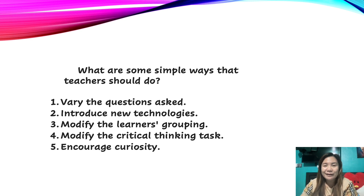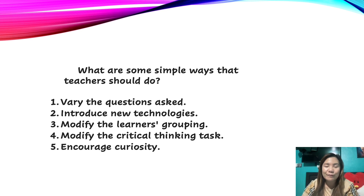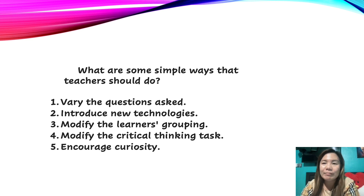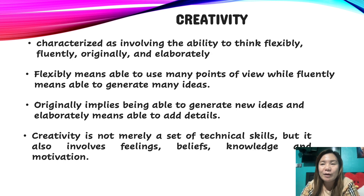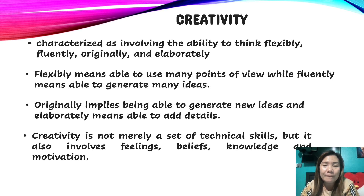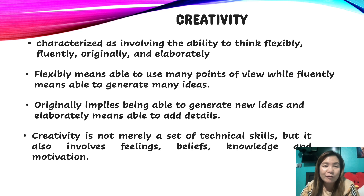Now let us talk about creativity. Creativity is characterized as involving the ability to think flexibly, fluently, originally, and elaborately. Flexibility means being able to use many points of view. Fluently means being able to generate many ideas. Originally implies being able to generate new ideas. Elaborately means being able to add details. If you are creative, your output is original, fluent, elaborated on your own little ways, and flexible. Creativity is not merely a set of technical skills — it also involves feelings, beliefs, knowledge, and motivation.